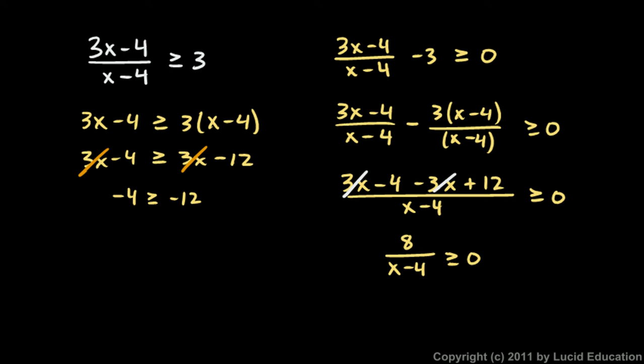...then x minus 4 has to evaluate to a positive value. So I'm going to just write that x minus 4 must be greater than or equal to 0, which just means x is greater than or equal to 4. And so that's it. That's my answer. x is greater than or equal to 4.